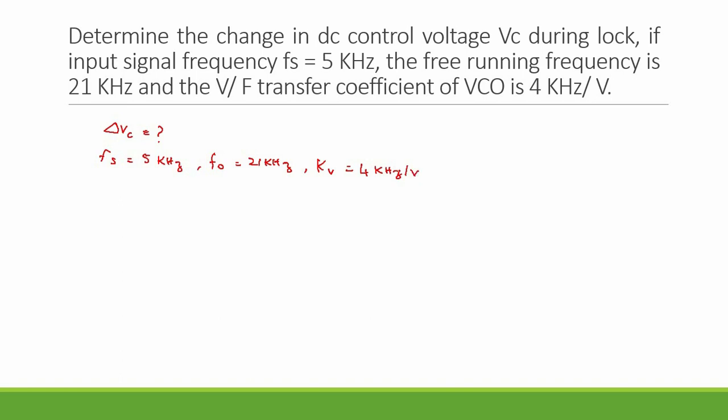Now we have to find del Vc. The formula that relates Kv and del Vc is Kv equals del Fc divided by del Vc. So from this we can easily calculate del Vc is equal to del Fc divided by Kv.